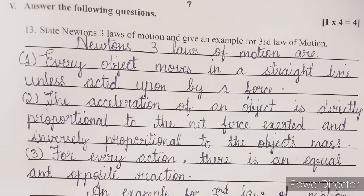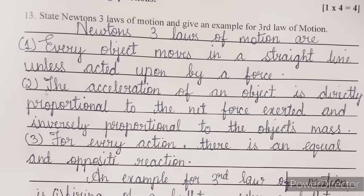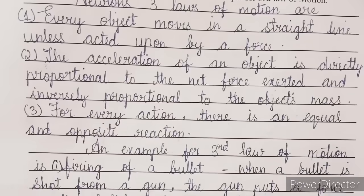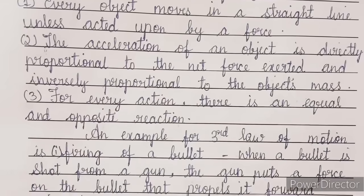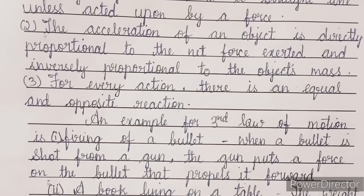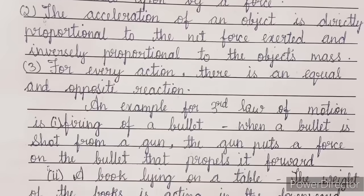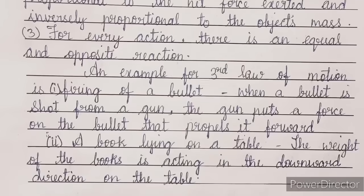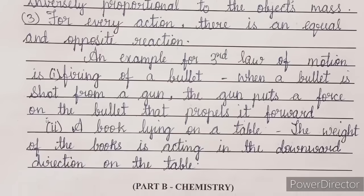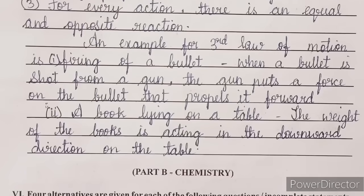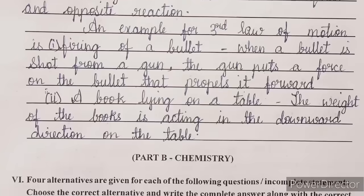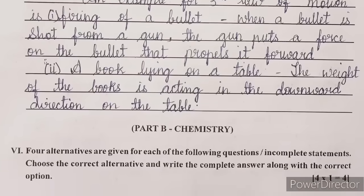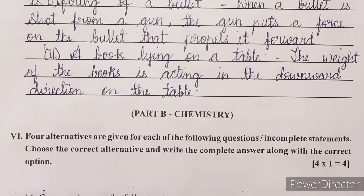Next question: state Newton's three laws of motion and give an example for the third law. Answer — Newton's three laws of motion are: (1) every object moves in a straight line unless acted upon by a force; (2) the acceleration of an object is directly proportional to the net force exerted and inversely proportional to the object's mass; (3) for every action there is an equal and opposite reaction. An example for the third law is firing a bullet — when a bullet is shot from a gun, the gun puts a force on the bullet that propels it forward. Another example is a book lying on a table; the weight of the book acts downward on the table.